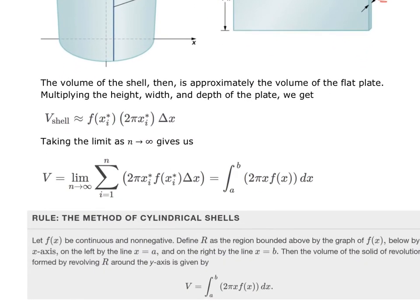As x goes to infinity, we take our Riemann sum to an integration. This integration is 2πr times h, where h is the height of the function and x is the radius. The radius is not always going to be x — we'll discuss examples where the radius is not x or y.